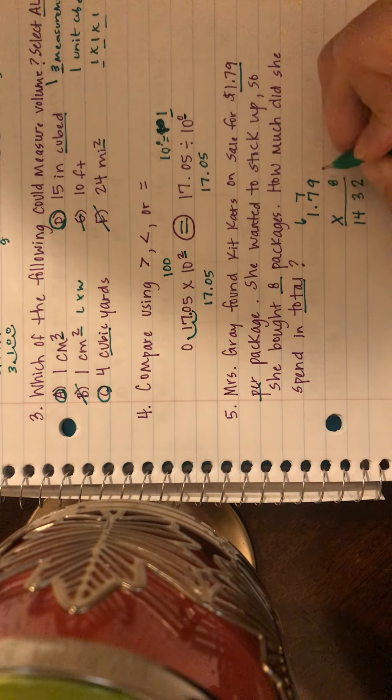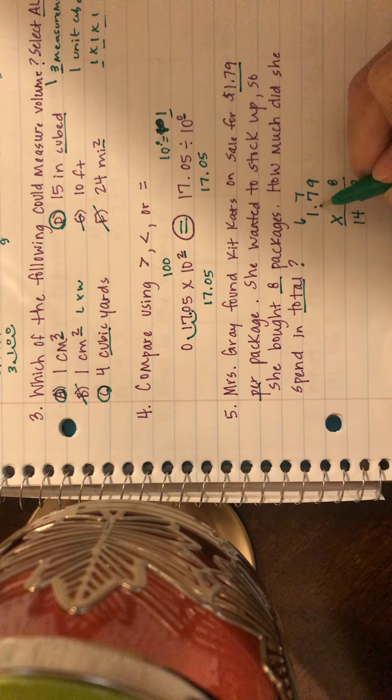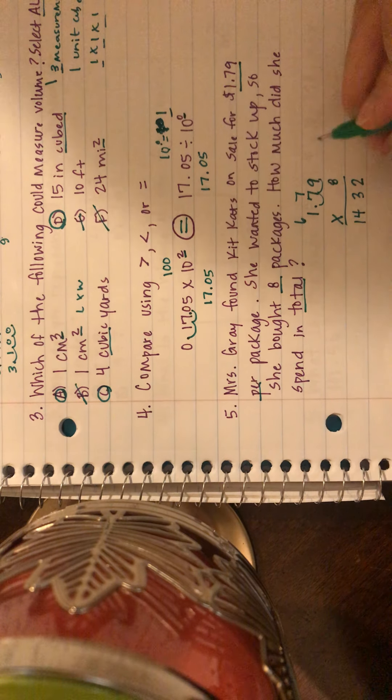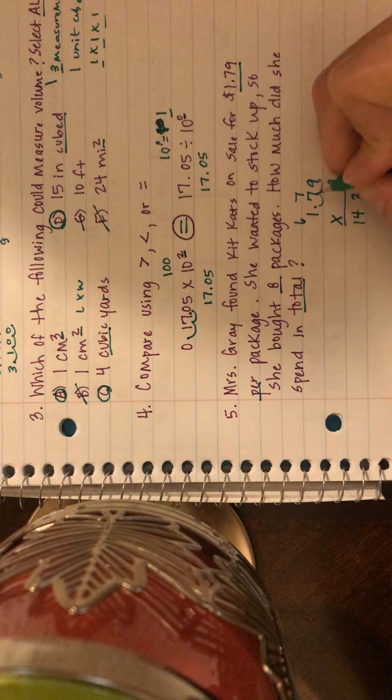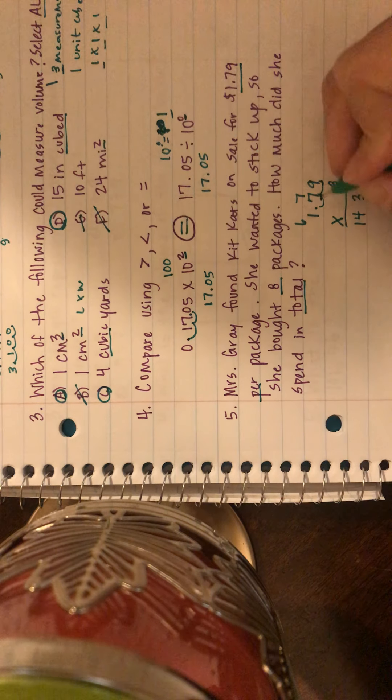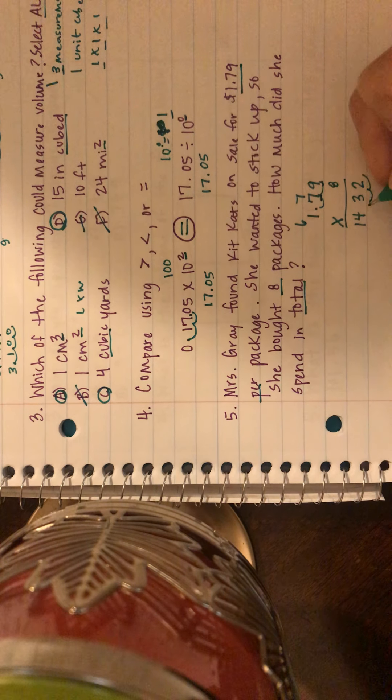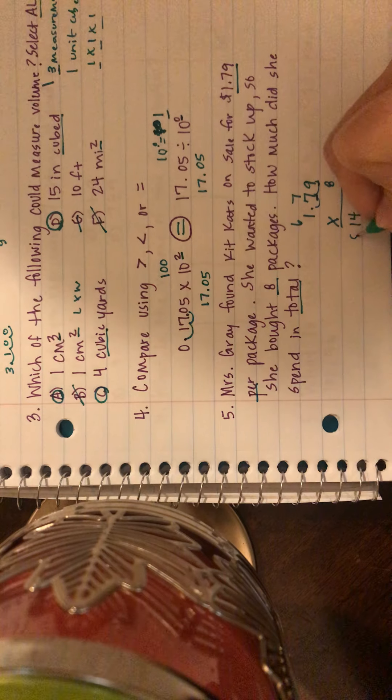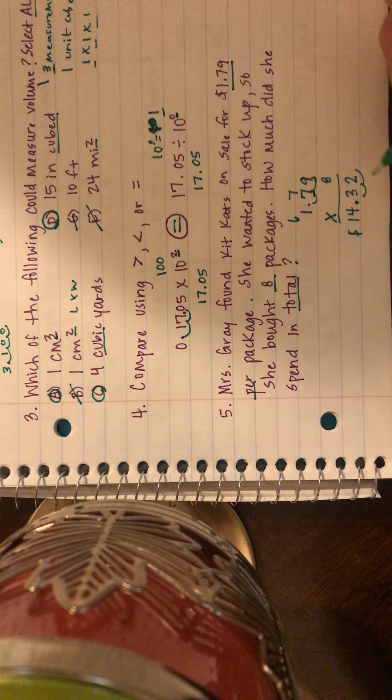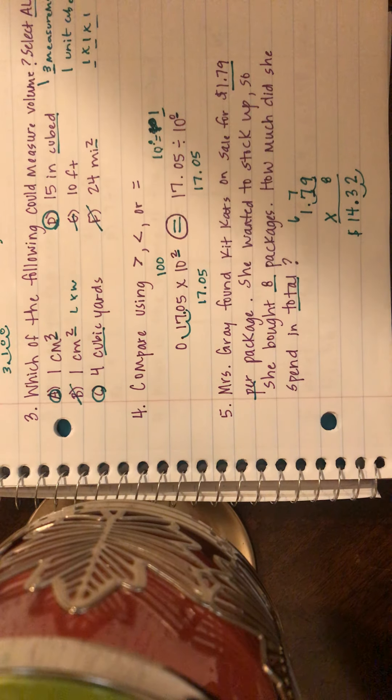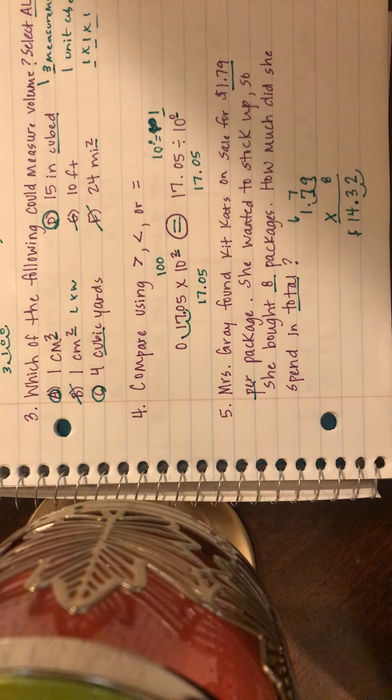Okay, and you know we treat these like whole numbers when we're multiplying. So you could if you wanted to move it out, but now we've got to push it back in. I have two numbers behind the decimal point, I moved it out two places, so I've got to move it back in two places. And she spent $14.32. Alright guys, see you tomorrow.